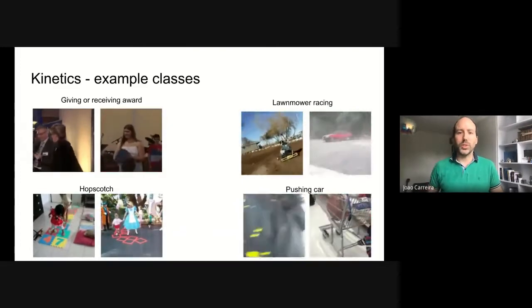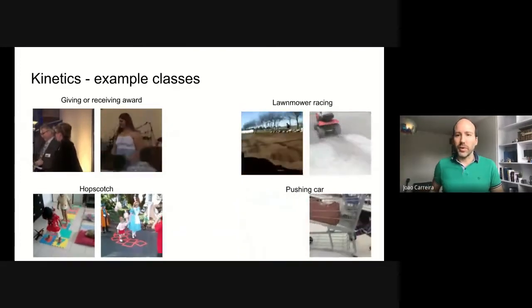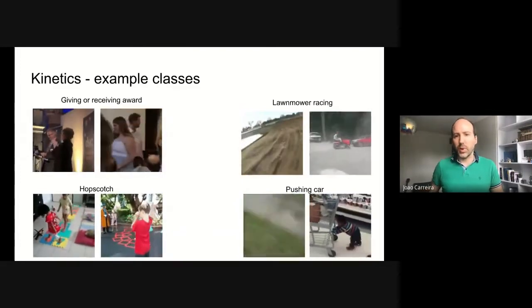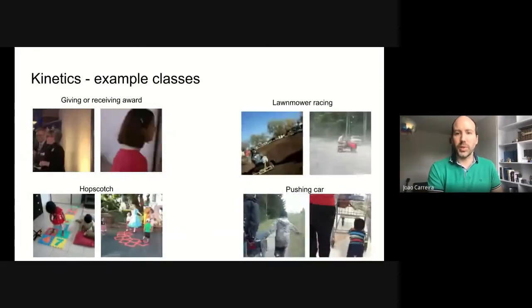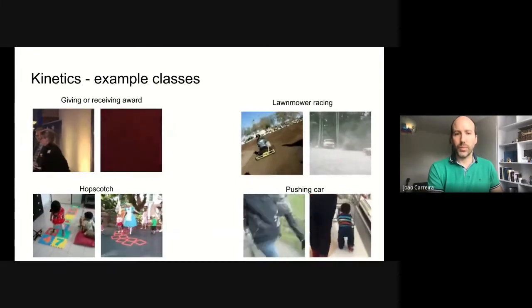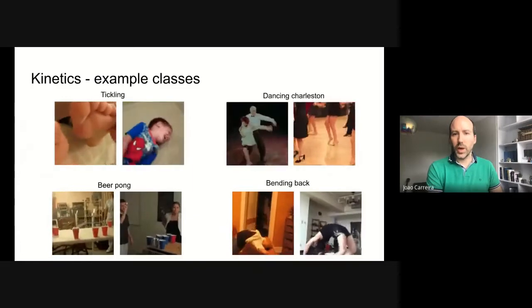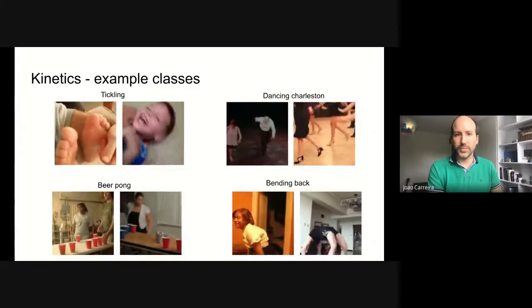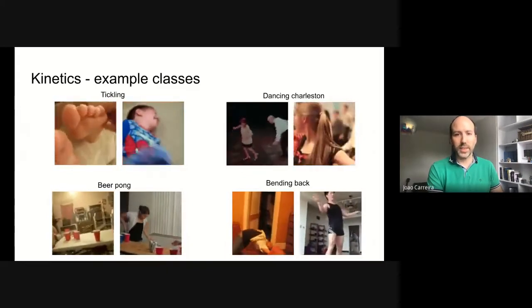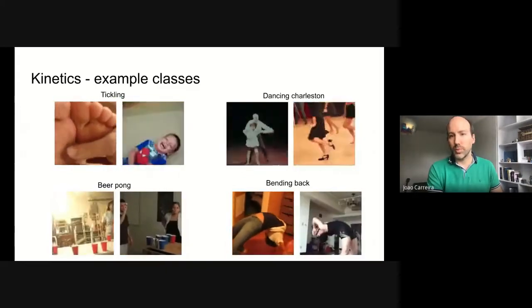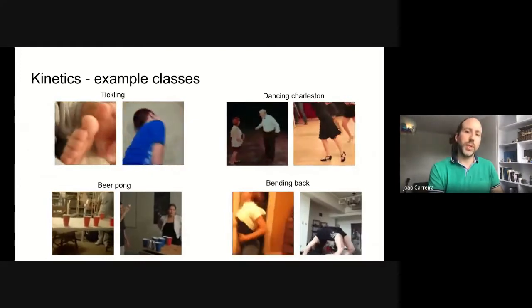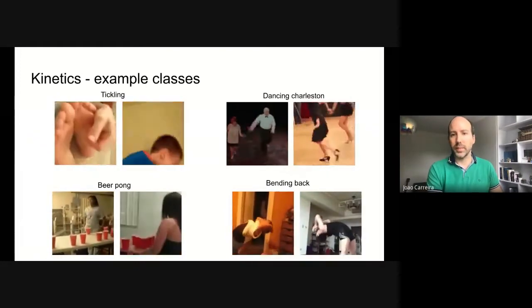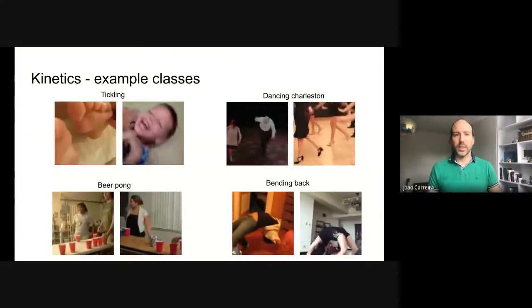There is a wide variety of scenes, indoors and outdoors, camera motions from static all the way to very shaky, clothing, body shapes, objects, number of people, etc. Here are a few more examples. There are many person-person interaction classes such as tickling. We have always been proud of our dance classes, which should promote better motion representations. There are also plenty of exercise classes such as bending back, as well as party classes like beer pong.